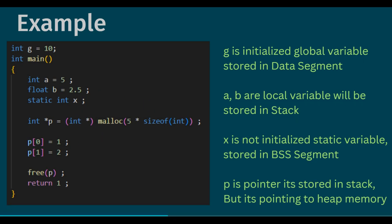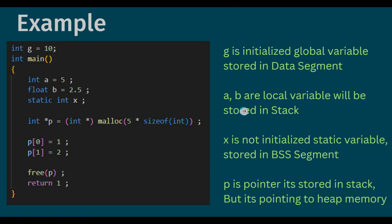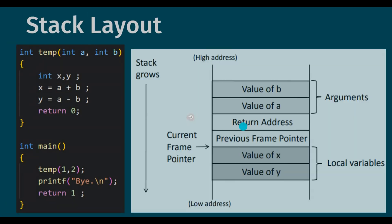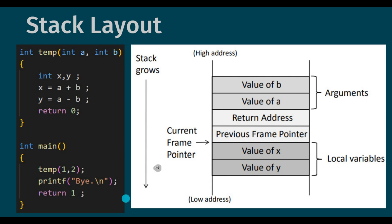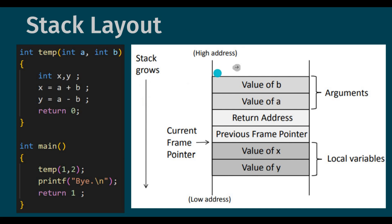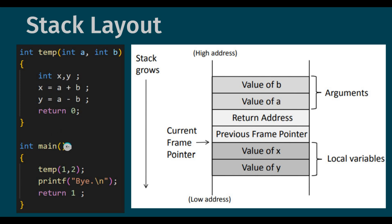So far we discussed how memory will be allocated for the process when a program is running. In the next slide, let us discuss how a stack frame will be allocated when there is a function call. We know that stack grows downwards — from higher address to lower address, as discussed in the first slide. Here there are two functions: one is the temp function and another is the main function. Main function will call the temp function. Whenever there is a function call, the compiler will allocate a stack frame for that called function.